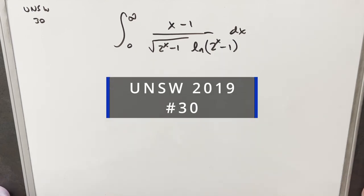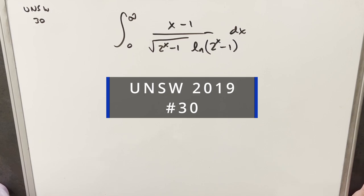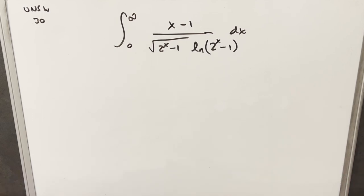We have here today a pretty difficult looking problem. This one's from UNSW integration B 2019, problem 30. We have the integral from 0 to infinity of x minus 1 over the square root of 2x minus 1 times natural log of 2x minus 1, dx.